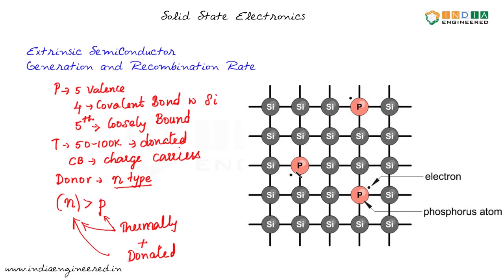No holes are generated by the phosphorus atoms. This extra electron does not belong to any bond, and we define a vacancy in a bond as a hole. So phosphorus atoms do not contribute to the generation of holes — they only contribute to the generation of electrons. However, once phosphorus donates this electron to the crystal, the phosphorus atom itself gains a positive charge. These phosphorus atoms are held in the crystal by lattice forces, so they are immobile.